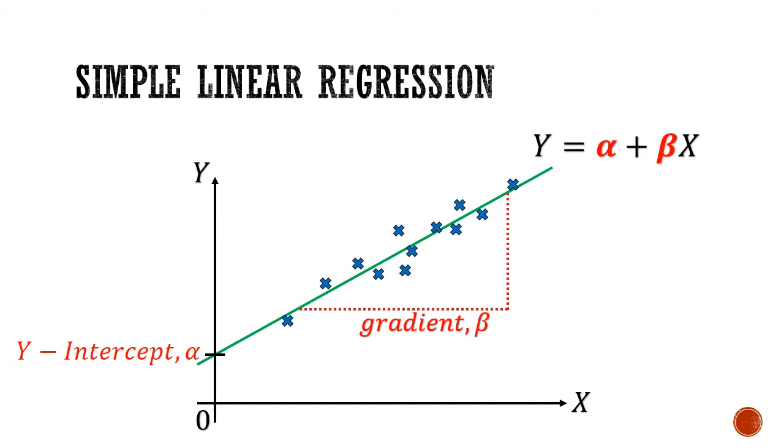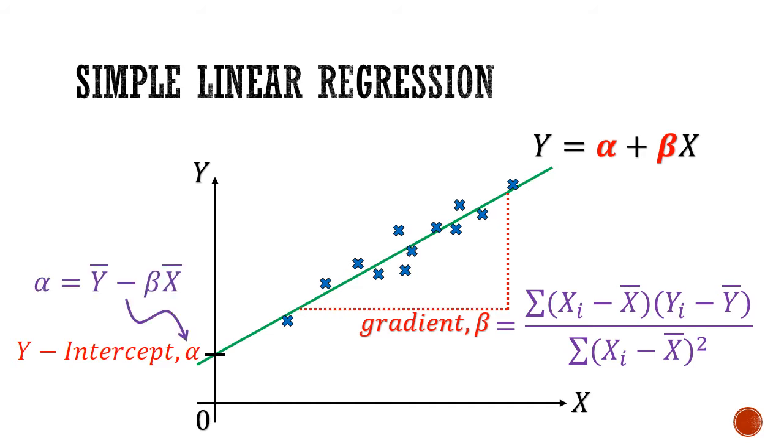The regression formula gives us a mathematically sound way to calculate the gradient. And from the gradient, we are also able to calculate the y-intercept. Now with that out of the way, let's look at how to use the calculator to find the y-intercept alpha and gradient beta.